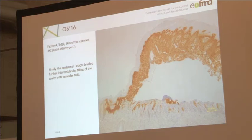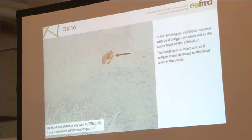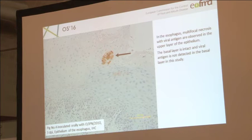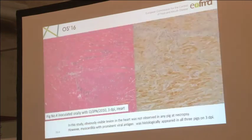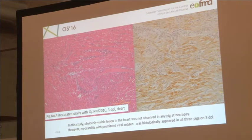In other organs examined, erosion was observed in the mucosal membranes of the lower lip in two of three pigs at three days post-inoculation. In the esophagus, multiple focal necroses with viral antigen were observed in the upper layer of the epidermis. The basal layer is intact and viral antigen is not detected in the basal layer, the same as in the tongue and skin of the coronary band and heel. The inoculated virus infects first at the upper layer of the epidermis. In this study, obvious visceral lesions in the heart were not observed in any pig at necropsy — no tiger stripe pattern. However, myocarditis with prominent viral antigen was histologically apparent in all three pigs at three days post-inoculation.